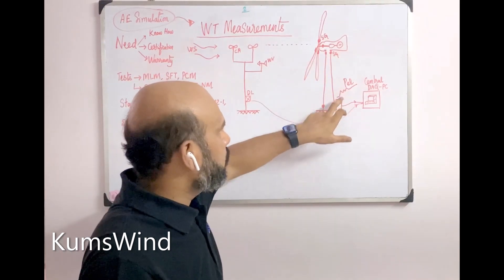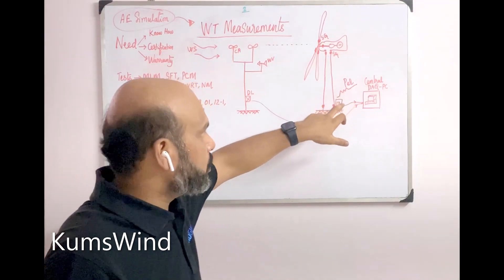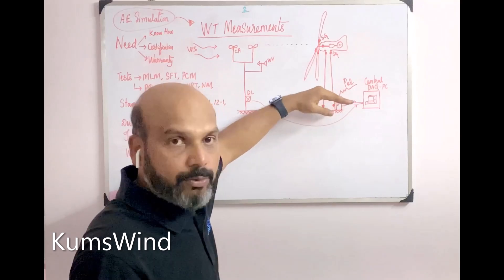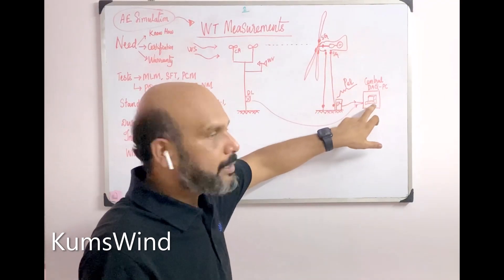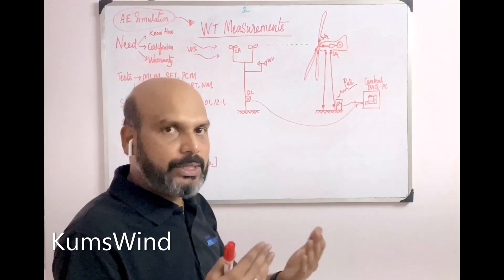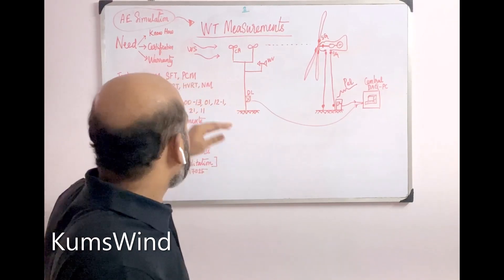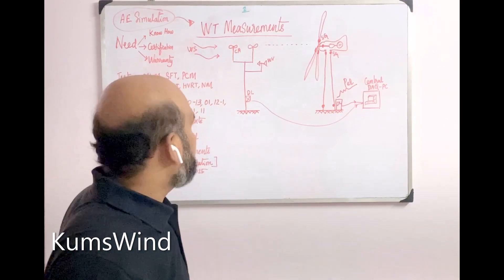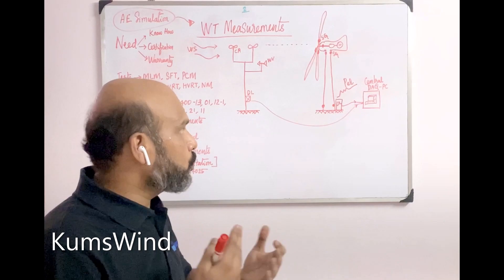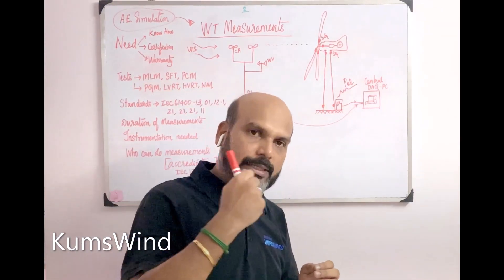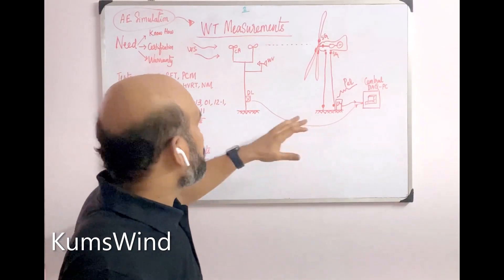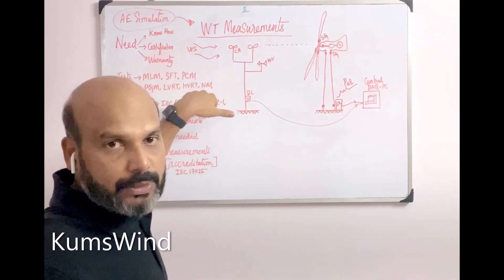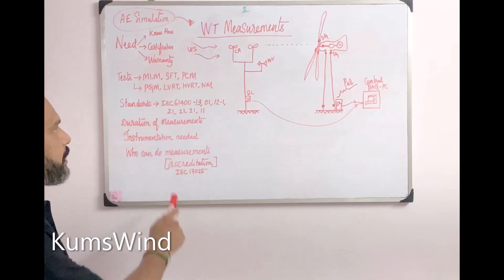Apart from mechanical sensors, current transformers (CTs) and potential transformers (PTs) mounted at the tower bottom measure electrical power, grid frequency, and reactive power produced by the turbine. All sensors are connected to a central PC-based data acquisition system with a high sampling frequency. Sampling requirements vary by measurement: power curve measurements need at least 1 Hz sampling, while power quality measurements require kilohertz-range sampling to capture sudden transients during turbine cut-in and cut-out. Sensor accuracy requirements are also specified in the respective standards.